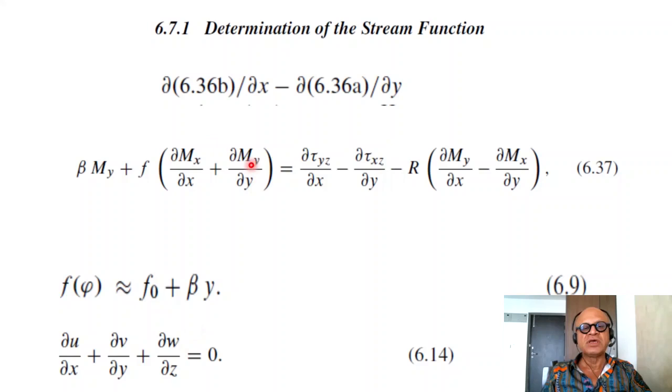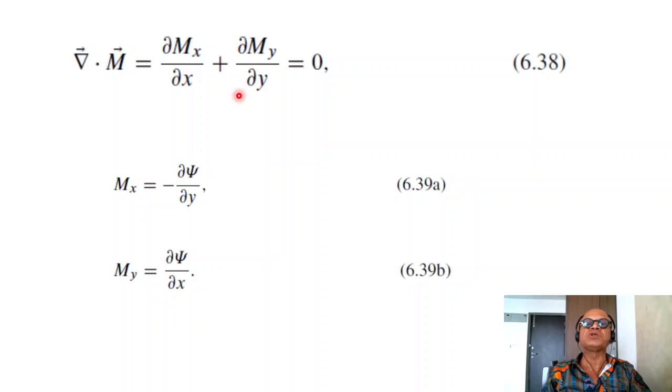Plus F times del mx del x plus del my del y. Immediately you recognize the form from the continuity equation. Should be equal to del tau y z del x, so the meridional forcing, minus del tau x z del y, the zonal forcing. This is basically the wind stress curl. If you curl your fingers around the wind, for example, trade winds in the low latitudes and westerlies in the mid latitudes, you get a negative curl because the fingers, the right hand rule, the thumb will point into the ocean. Okay, minus r times del my del x minus del mx del y, which is the frictional dissipation of the transport because of the simple assumption that bottom friction is proportional to velocity or the mass transport.